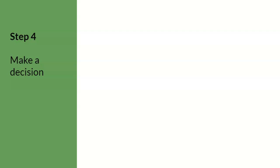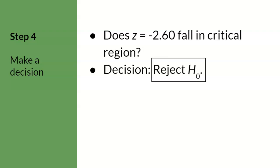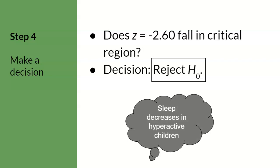Step 4. Now we need to compare the sample t-score calculated in Step 3 to the population prediction determined in Step 2. Does t equal negative 2.60 fall in the critical region from Step 2? Since negative 2.60 is below the mean in the tail, past the t of negative 2.132, the answer is yes — the decision is to reject the null hypothesis. More specifically, since the t-score for the sample was negative 2.60, which is below the mean, it looks like sleep decreased in hyperactive children.